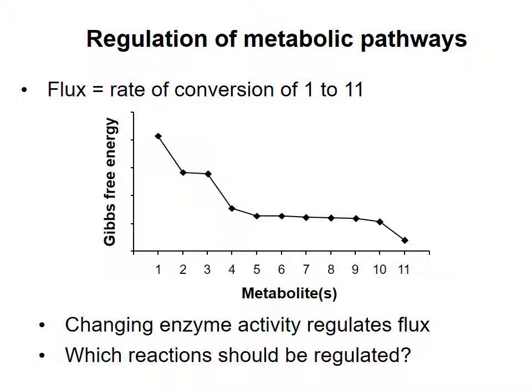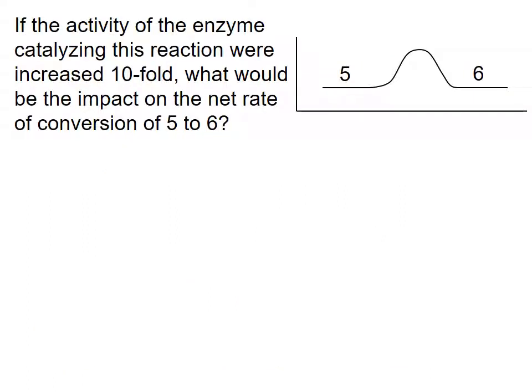Let's consider first a reaction near equilibrium, such as the conversion of compound 5 to compound 6. If the activity of the enzyme catalyzing this reaction were increased tenfold, what would be the impact on the net rate of conversion of 5 to 6?